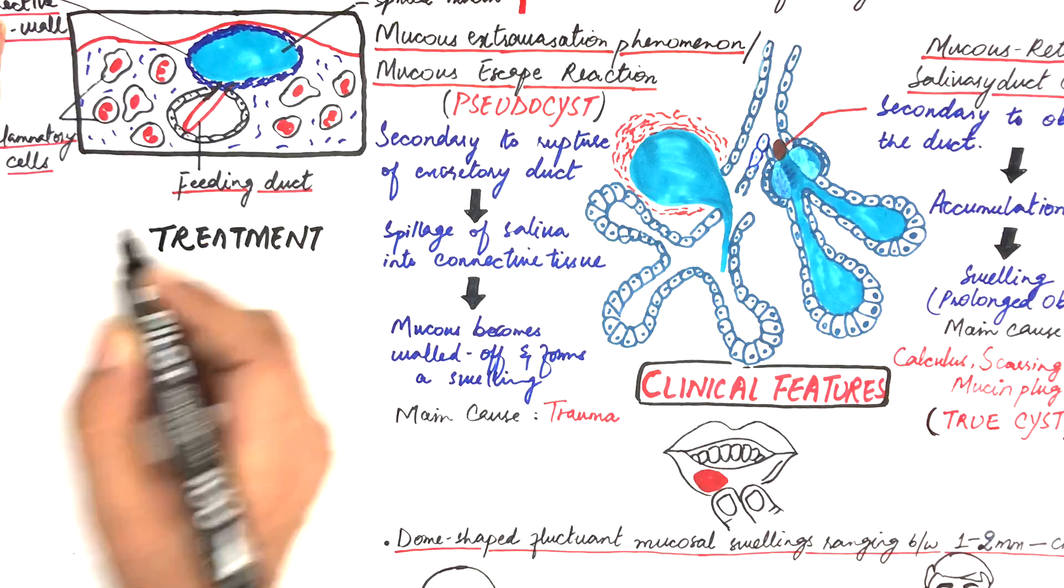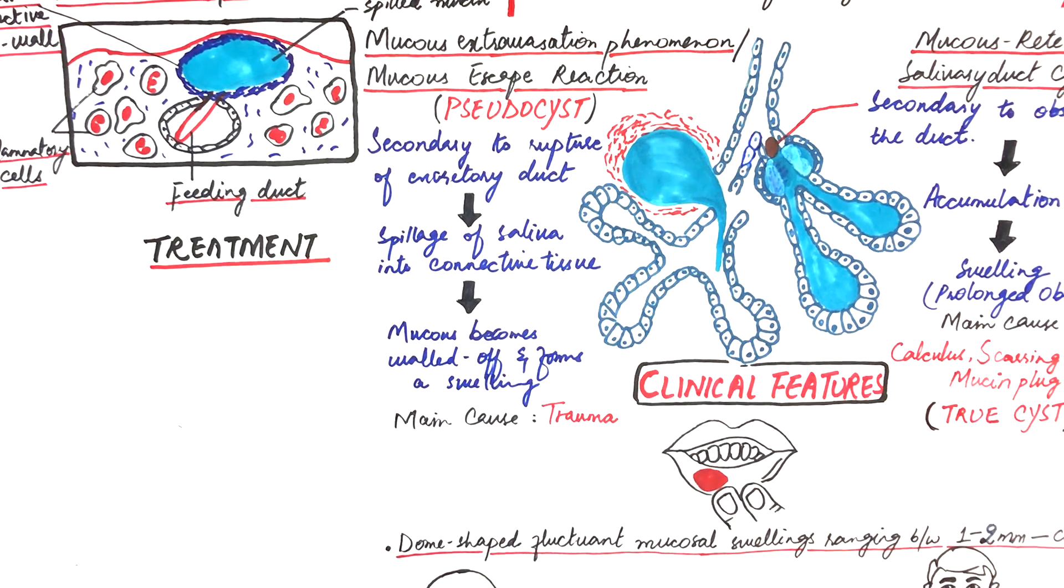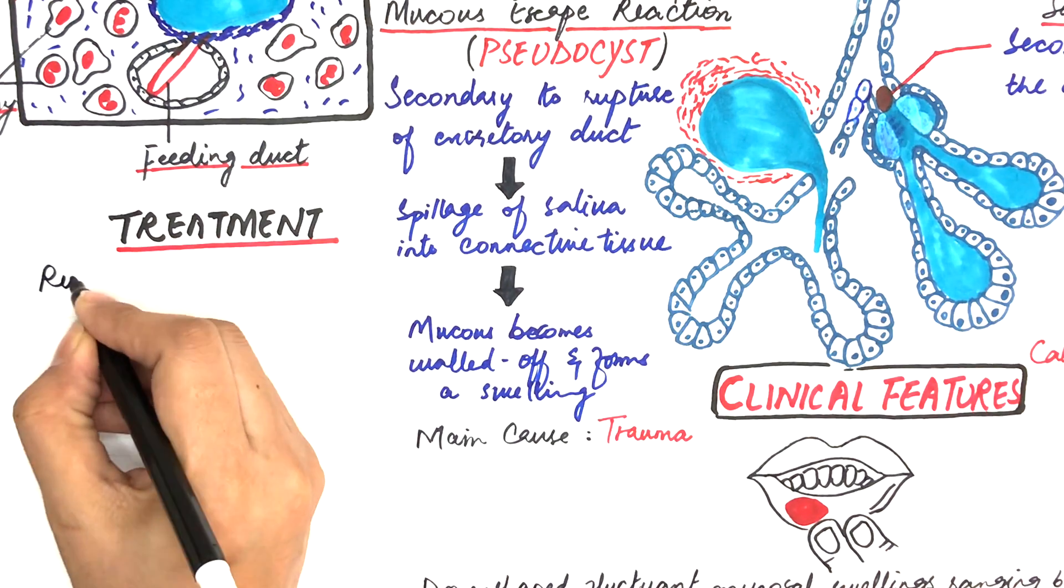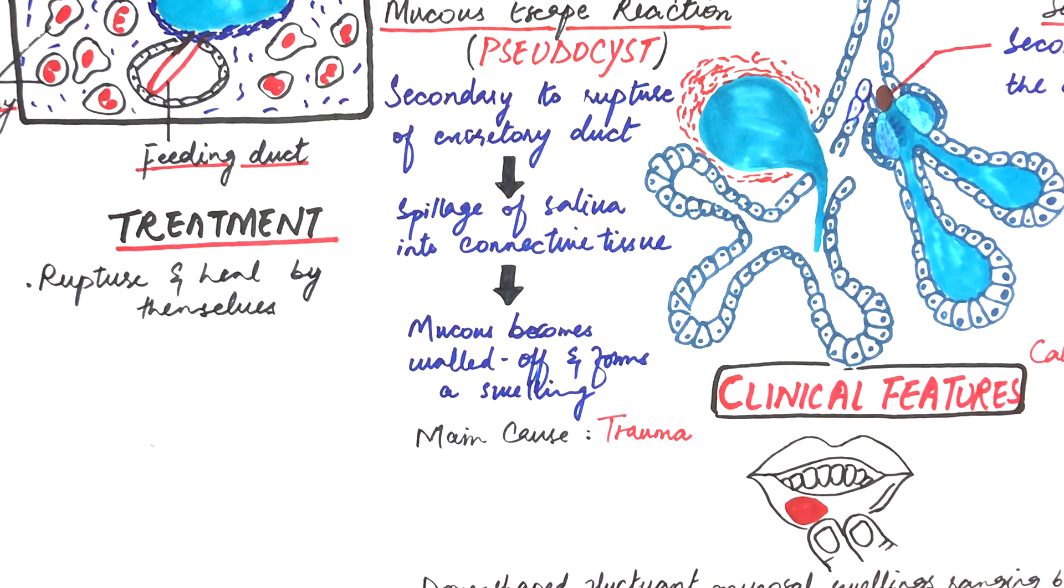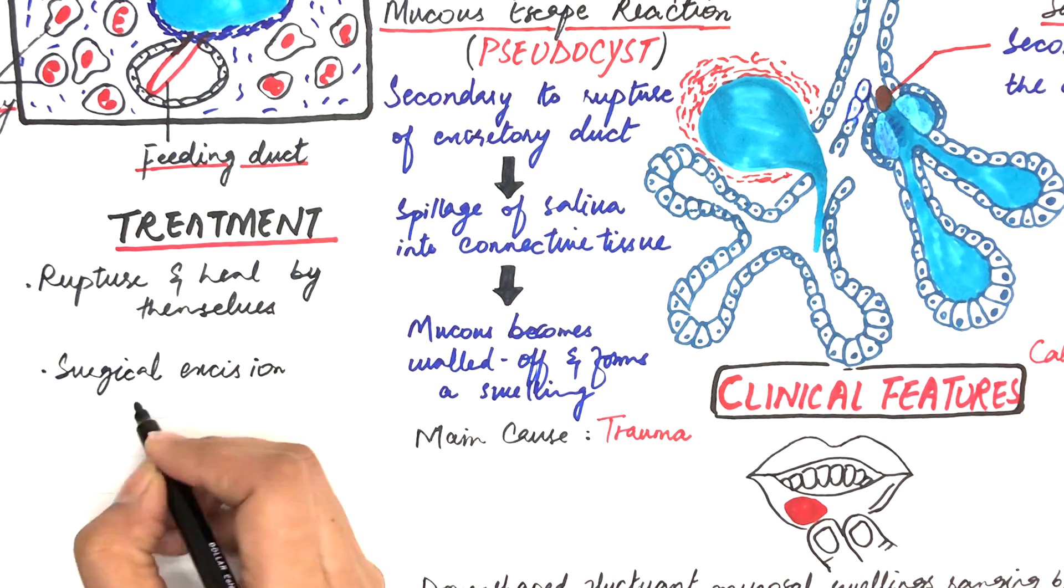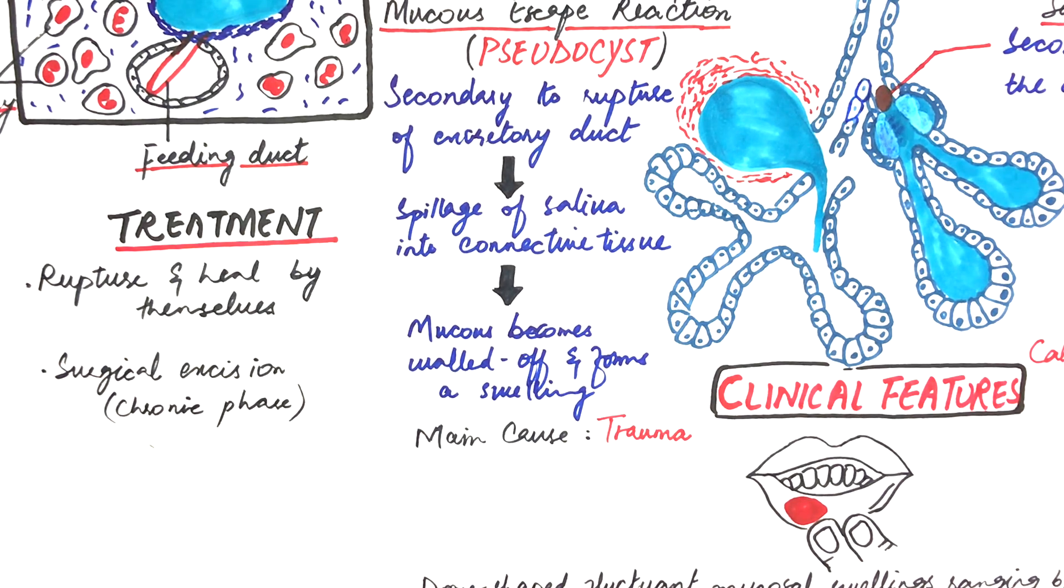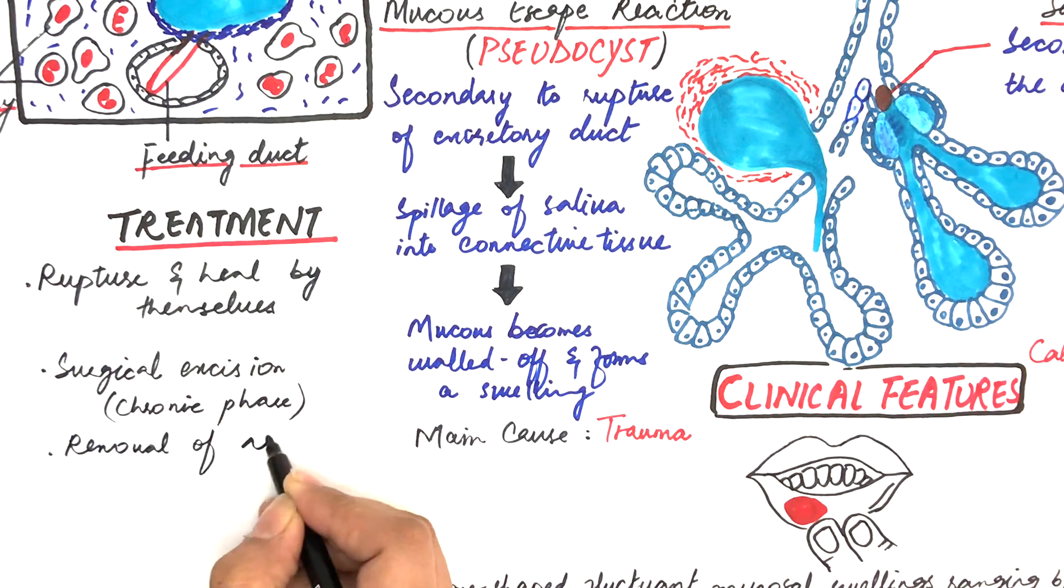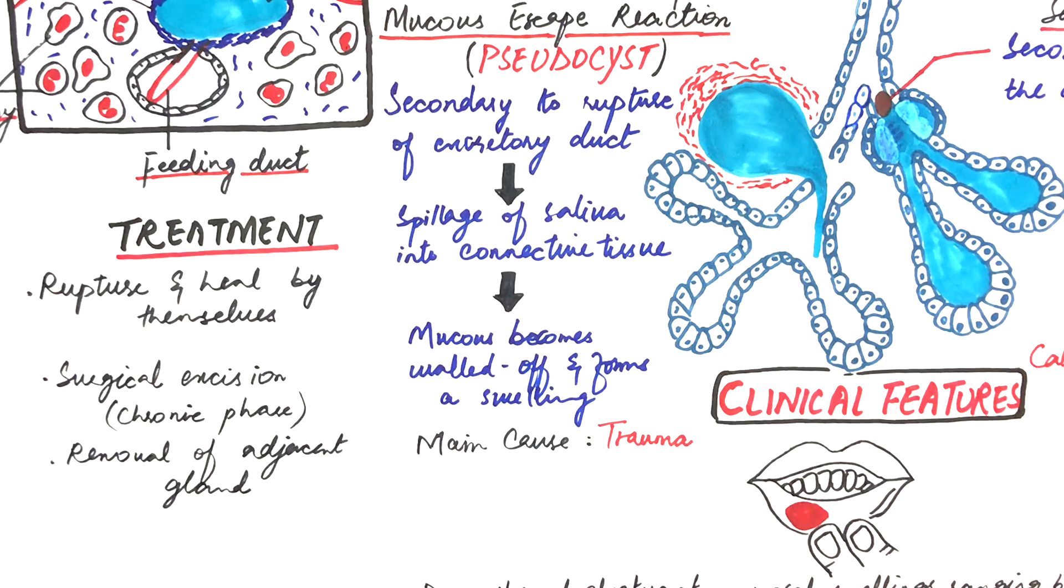On the other hand, the extravasation type are usually short-lived lesions. They rupture and heal in a period between three to six weeks on its own. In some cases, the lesion may enter a chronic phase where local surgical excision becomes necessary. Since this type has the tendency towards recurrence, removal of adjacent minor salivary gland becomes necessary, especially in the cases where the adjacent gland appears to be feeding into the lesion when the area is excised.